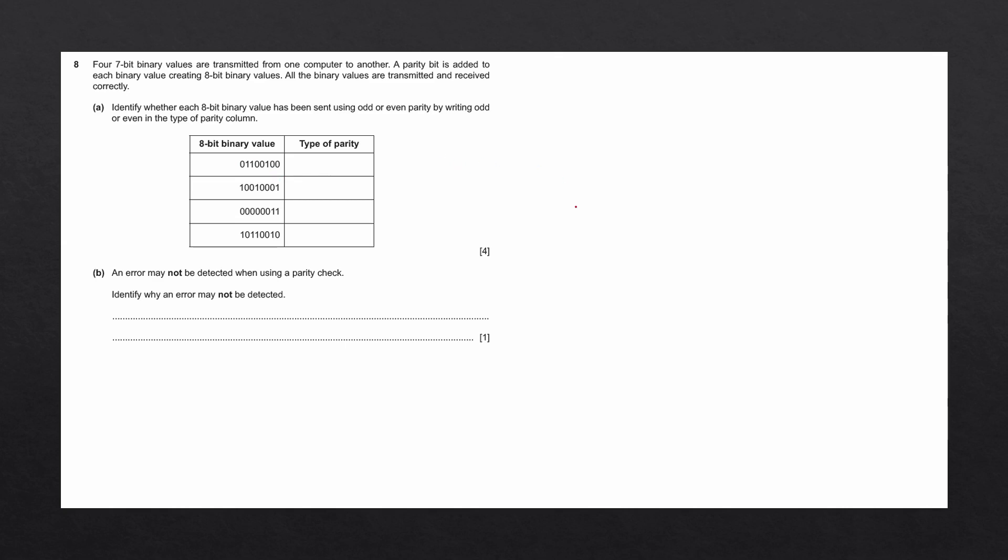To give you the context, we have computer A and computer B, and we want to transfer some data from A to B. To ensure that data arrives correctly at B, we're going to be using this type of error checking method called the parity check.